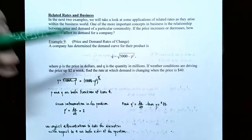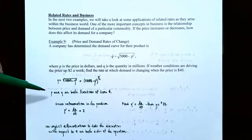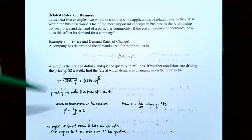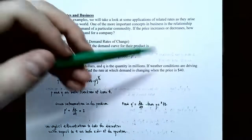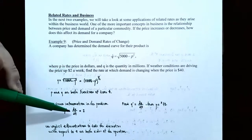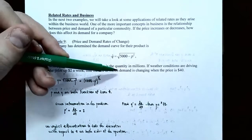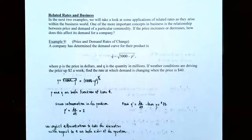Note that P and Q are both functions of time — time is measured in weeks. So whenever you take the derivative of P, you multiply by P prime, and similarly for Q. The given information: weather conditions are driving the price up $2 a week, so dP/dt equals 2. We're asked to find dQ/dt when the price P equals $40.